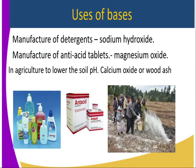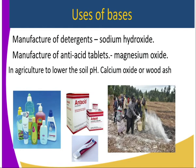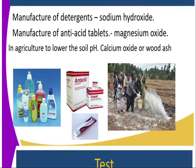In agriculture, bases are used to raise the pH of soil. If the pH of soil is below seven, it is acidic and does not favour production of certain crops. An agricultural officer may recommend application of calcium oxide or wood ash, which raises the soil pH to optimum levels for crop production. Bases are also used in the manufacture of toothpaste — such as fluoride and zinc oxide — which improves our teeth and breath.